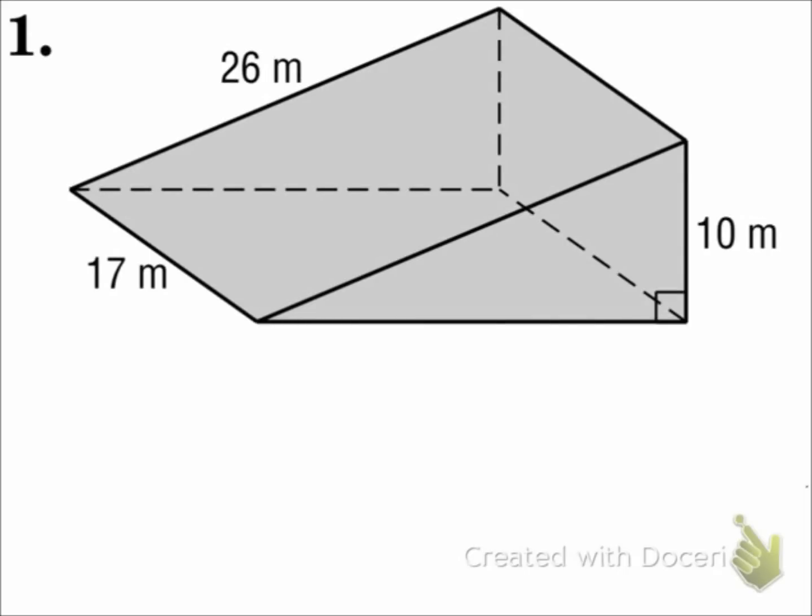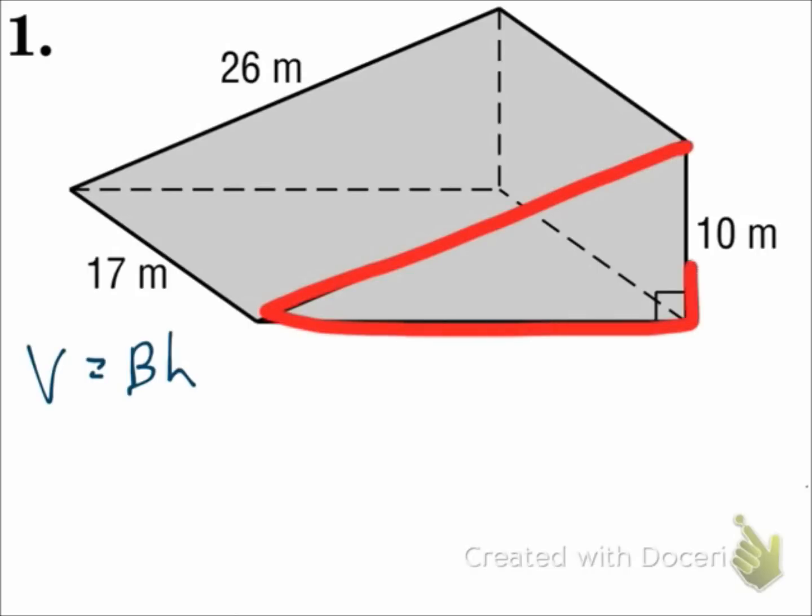Here we have a triangular prism. The volume of a prism is the area of the base times the height of the prism. On this one the base is a triangle. So I need to do the area of a triangle to substitute in for big B.